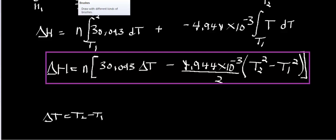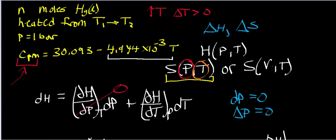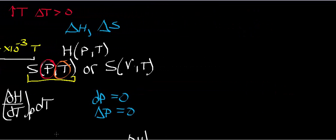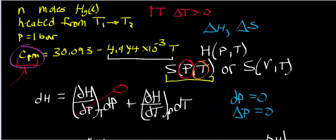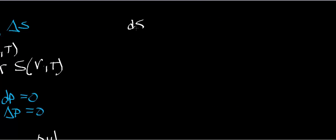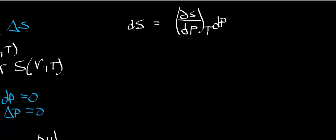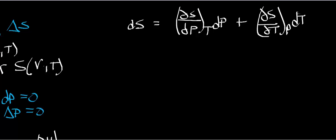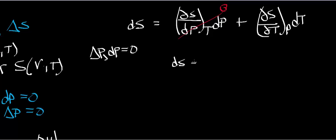Now we do a similar thing for the entropy change. We said entropy in this case is a function of pressure and temperature, and since we're dealing with a constant pressure heat capacity, we'll use that expansion. dS equals the partial of S with respect to P at constant T times dP, plus the partial of S with respect to T at constant P times dT. Again, since we're at constant pressure, dP equals zero, and that term drops out, leaving dS equal to the partial of S with respect to T at constant P times dT.